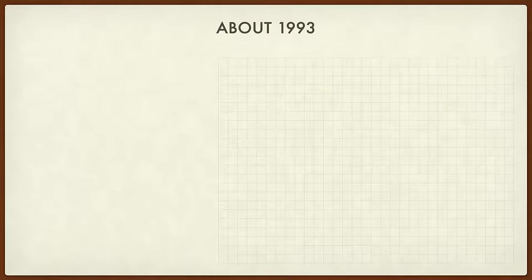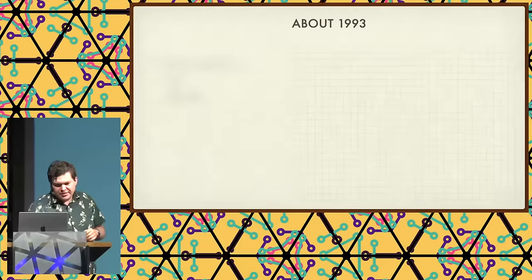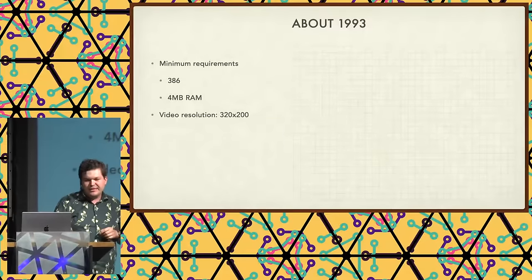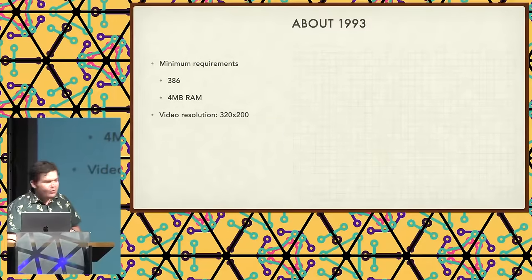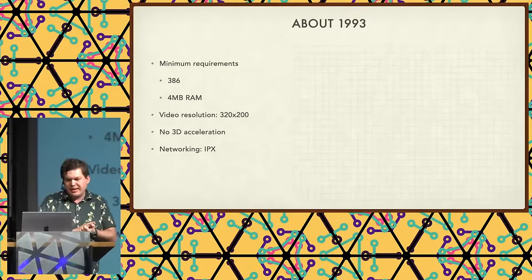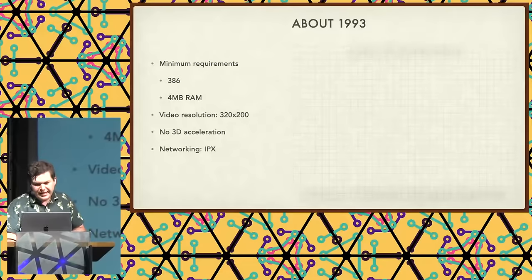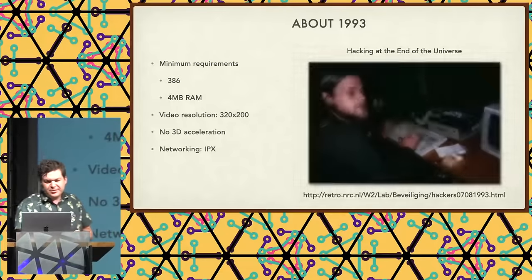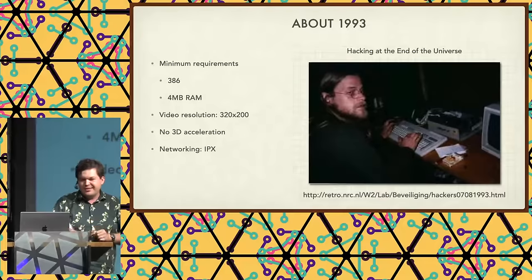Let's take a very, very brief segue to 1993. The minimum requirements for the game was a 386 with four megabytes of RAM running a very small 320 by 200 resolution. No 3D acceleration, and networking — not TCP/IP, it was IPX. Also in 1993, we had Hacking at the End of the Universe, the predecessor conference to this conference, which was also taking place at that time.